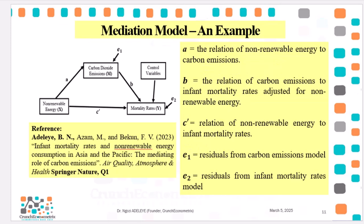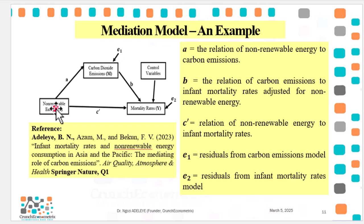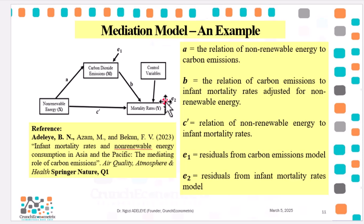In our analytical model: A shows the relationship between non-renewable energy and carbon emissions; B shows that of carbon emissions and infant mortality after adjustment for non-renewable energy; C prime captures the link between non-renewable energy and mortality rates controlling for carbon dioxide emissions. The residuals: E1 is from the carbon emissions model, and E2 is from the mortality rate model. If you are interested in this paper, please reach out to me on ResearchGate.